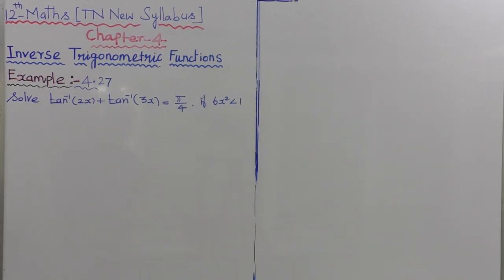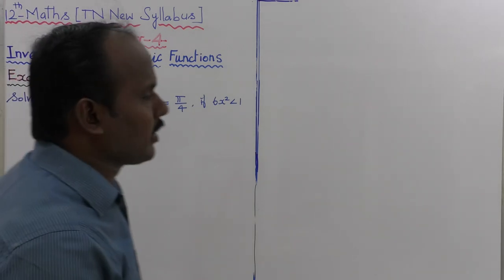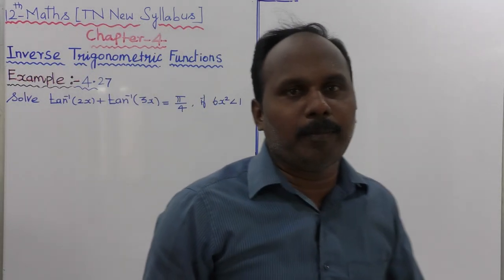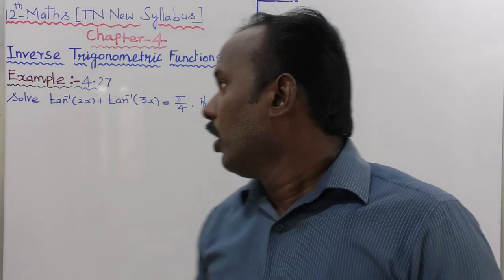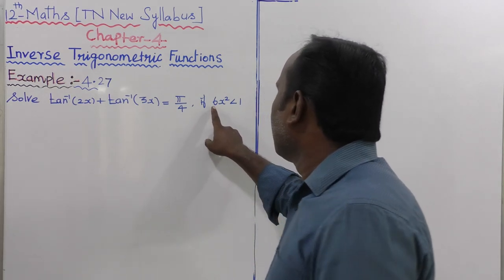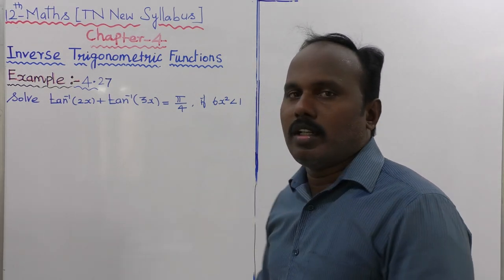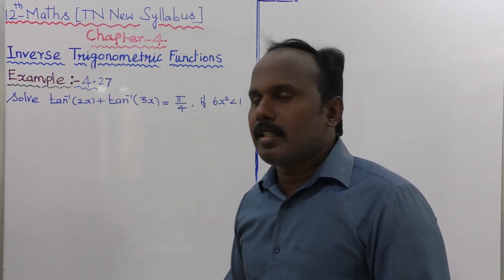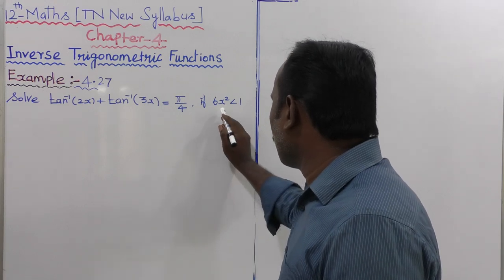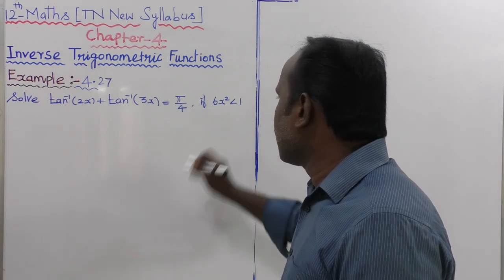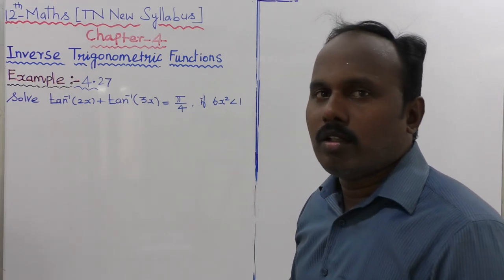Example 4.27: Solve tan inverse of 2x plus tan inverse of 3x equal to pi by 4. The condition is 6x squared is less than 1.